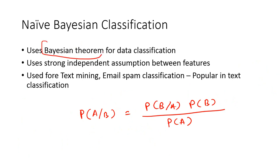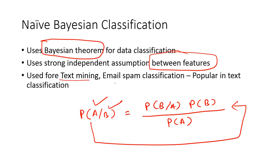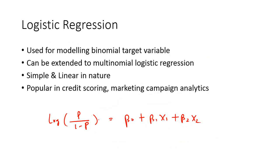The next one is the Naive Bayesian classification or classifier. This uses the Bayesian theorem - you're trying to find out the probability of event A happening given event B. It uses strong independent assumptions of features, so whatever features you are using in your data, it assumes there is strong independence, no dependency between the features. It's very popular in text mining and in classifying your email to be spam or normal emails.